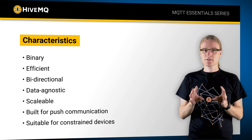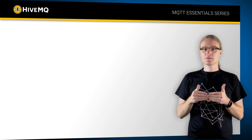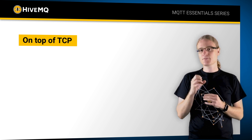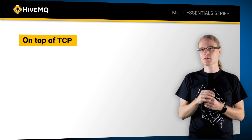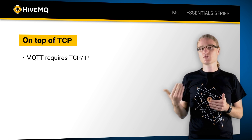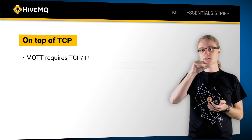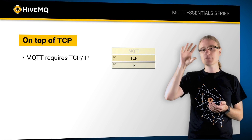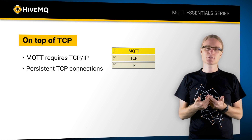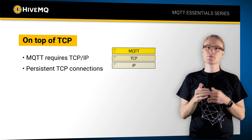All of these characteristics make MQTT so suitable for IoT. It's built upon TCP, which is huge. MQTT requires TCP — most internet protocols today run on top of TCP. The usual stack is IP, then TCP, then MQTT on top. MQTT uses persistent TCP connections, so as soon as a connection is established from device to cloud, that connection stays active and is used continuously.